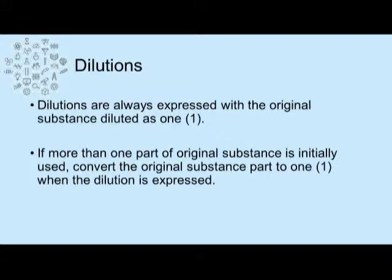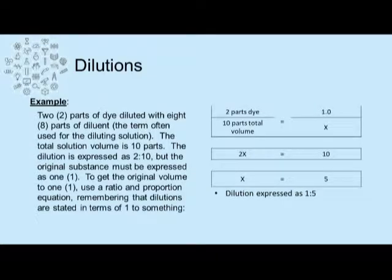Dilutions are always expressed with the original substance diluted as a one. If more than one part of the original substance is initially used, you want to convert that substance to a one when expressing that dilution. For example, we have two parts of dye diluted with eight parts of diluent. Diluent is the term we often use for the diluting solution.